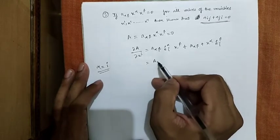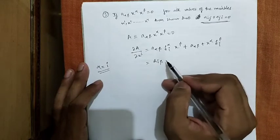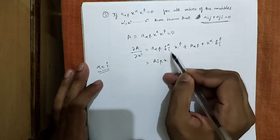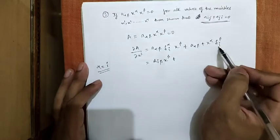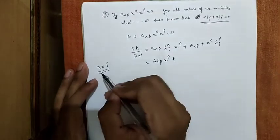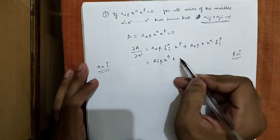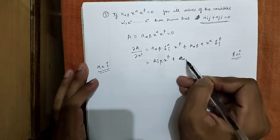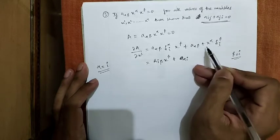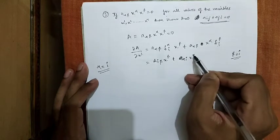Our equation changes to A_iβ x_β plus, and when beta equals to i, A_αi x_α.